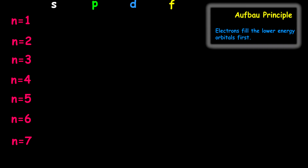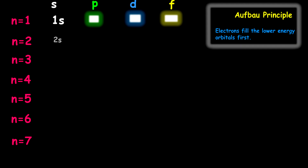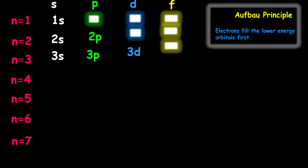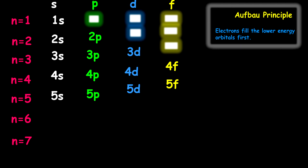We have to remember the sub-shells or the types of orbitals: S, P, D, and F. If N equals 1, we can only have the S orbital — there is no P, D, or F. The second shell holds S and P only. Where N equals 3, we have S, P, and D but no F. The fourth shell has S, P, D, and F. The fifth shell goes all the way up to F. The sixth shell stops at D, and the seventh shell stops at P.